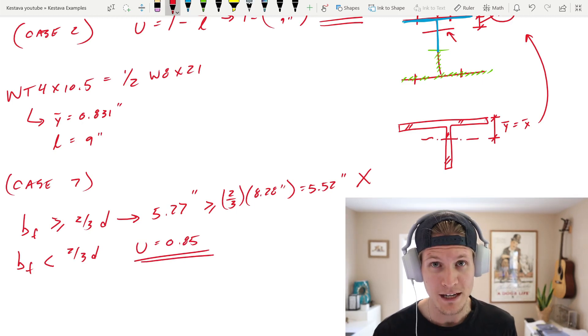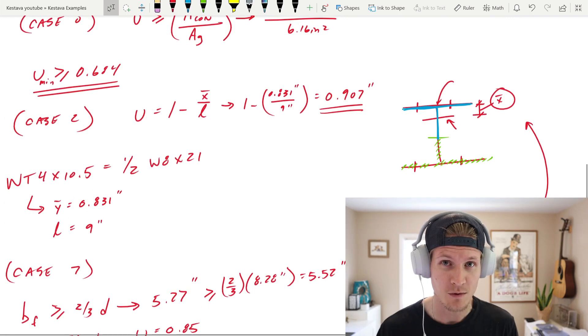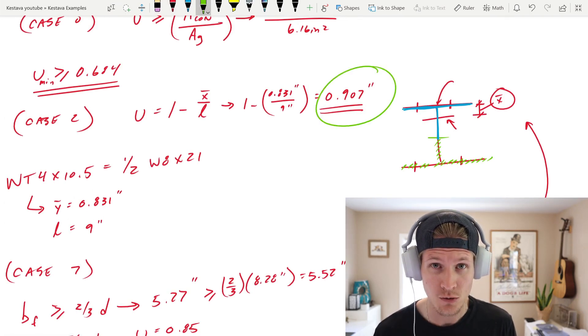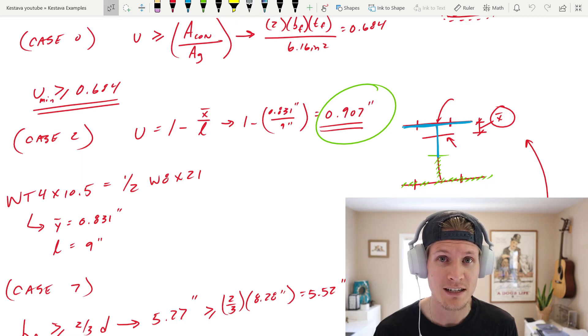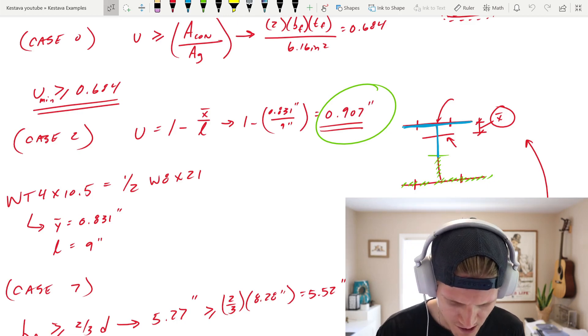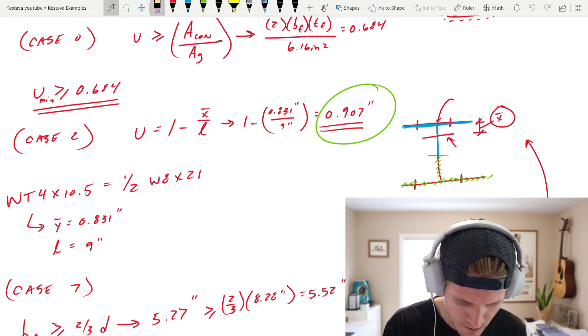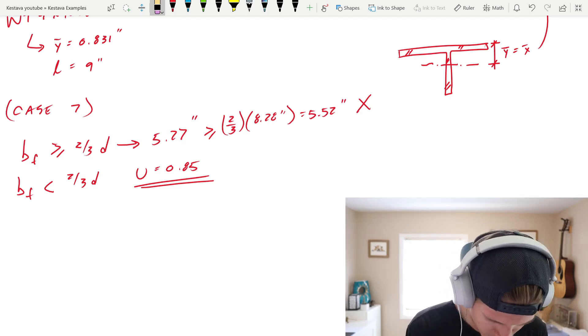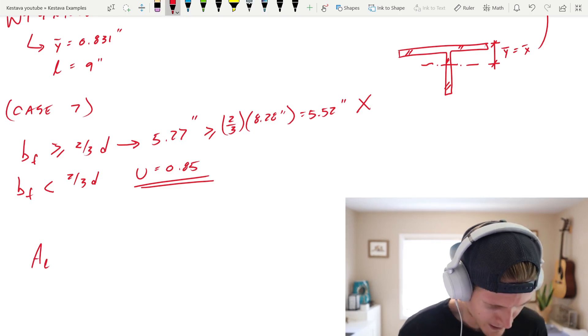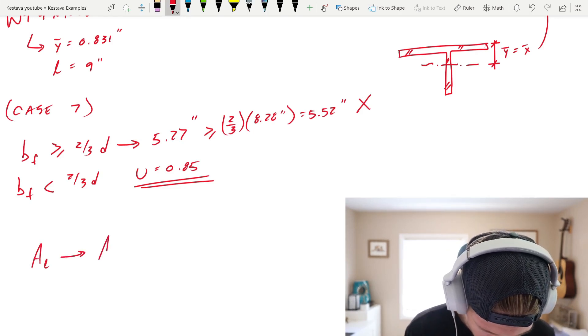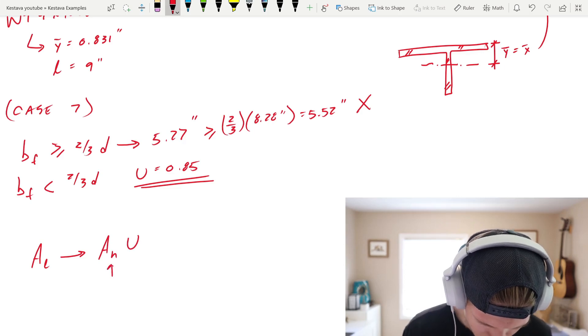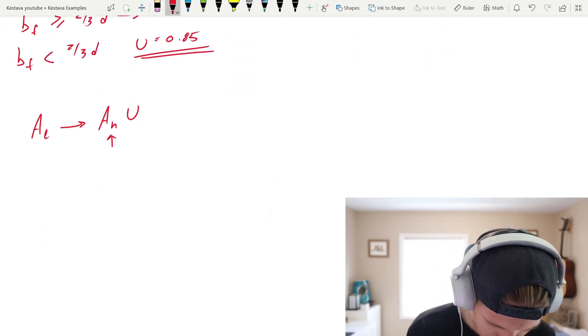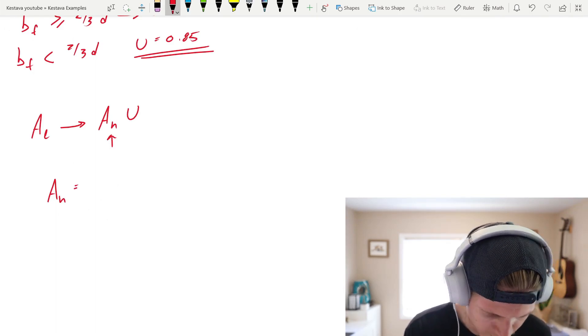And now with all of that information, we look at our case 0, 2, and 7, and we see which U is highest. In this case, case 2 is what we get to use. 0.907 is going to be our U. For some reason, I put U as inches. Let's just get rid of that. That was a mistake. Remember, we're still in our tensile rupture case, and we need to find our effective net area. Well, first, since we have U, we still need to find A sub N. A sub N, which is our net area, not effective, just our net area,